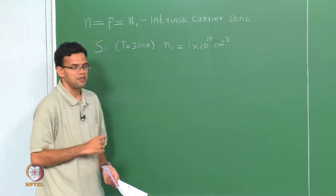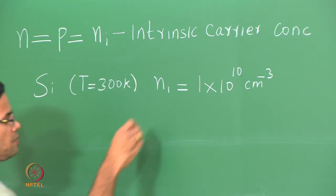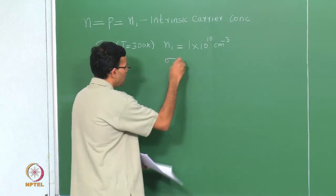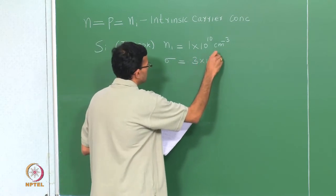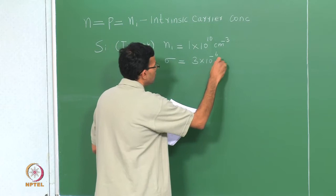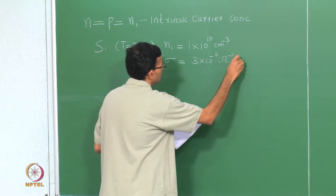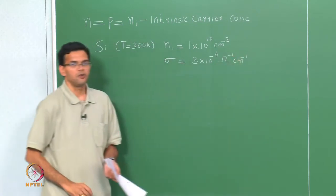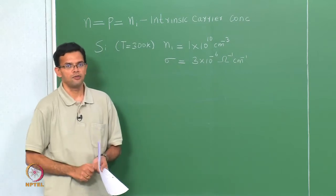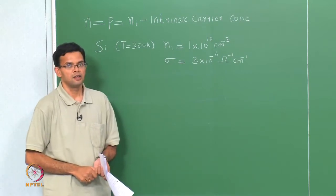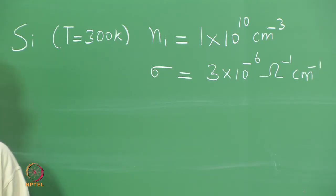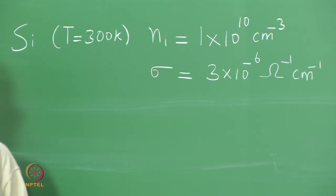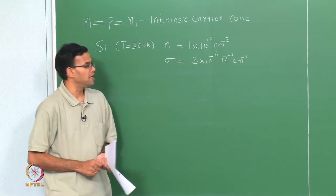This number is really low when we look at the concentration of atoms; correspondingly, the conductivity was also low — we got a value of 3 times 10 to the minus 6 ohm inverse centimeter inverse. We also saw that in the case of an intrinsic semiconductor, the carrier concentration Ni is a function of temperature. So the only way of increasing the conductivity, if you are not allowed to change the material, is by increasing temperature.